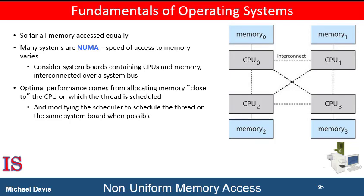To take NUMA into account, the scheduler must track the last CPU on which each process ran. If the scheduler tries to schedule each process onto its previous CPU, the virtual memory system tries to allocate frames for the process close to the CPU on which it is being scheduled. Then, improved cache hits and decreased memory access times will result.